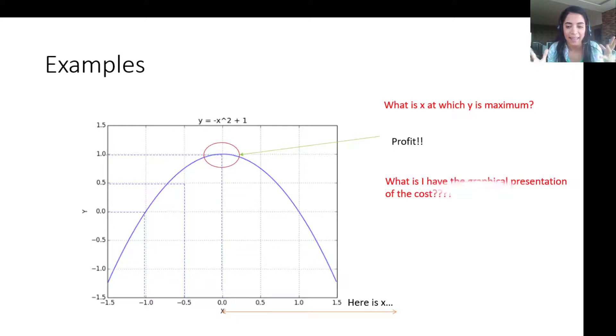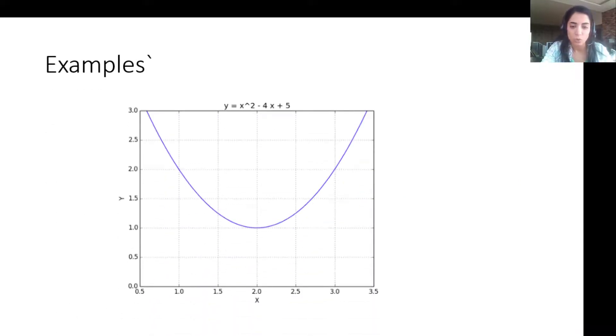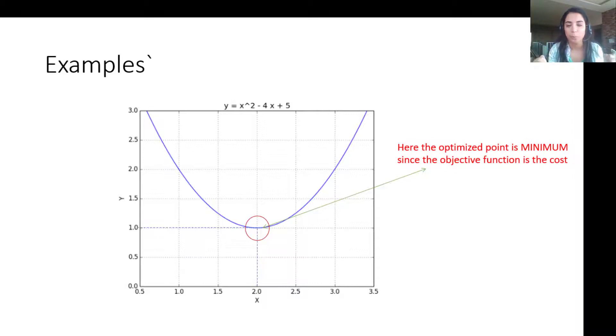Now what if I have the function of the cost? Do I have to do the maximum or the minimum? In fact if I have the cost I need to do the minimum or I need to find x at which y here is minimum and this is y. Now in this case the optimized point or x or input is given by the minimum y since the objective function here is the cost.